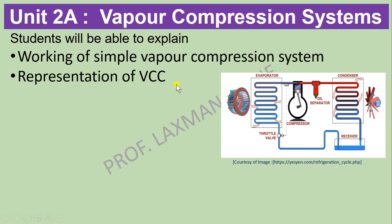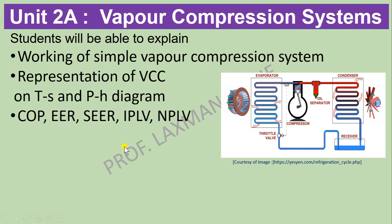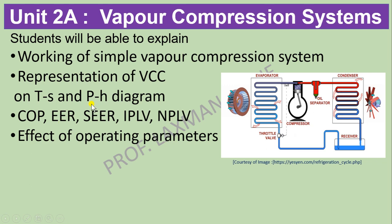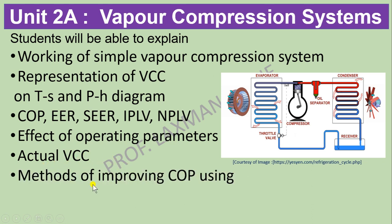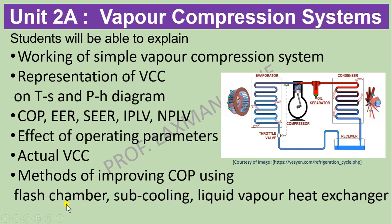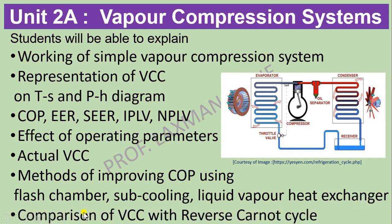The Vapor Compression Cycle is represented on the T-S diagram and P-H diagram, and a P-H chart for different refrigerants is available. Output parameters of the VCC include COP (Coefficient of Performance), EER (Energy Efficiency Ratio), SEER (Seasonal Energy Efficiency Ratio) applicable for air conditioners, IPLV (Integrated Part Load Value), and NPLV (Non-Standard Part Load Value). We also study the Effect of Operating Parameters on COP, Actual Vapor Compression Cycle, and Methods of Improving COP using Flash Chamber, Subcooling, and Liquid Vapor Heat Exchanger. Finally, a comparison between VCC and Reverse Carnot Cycle is studied.